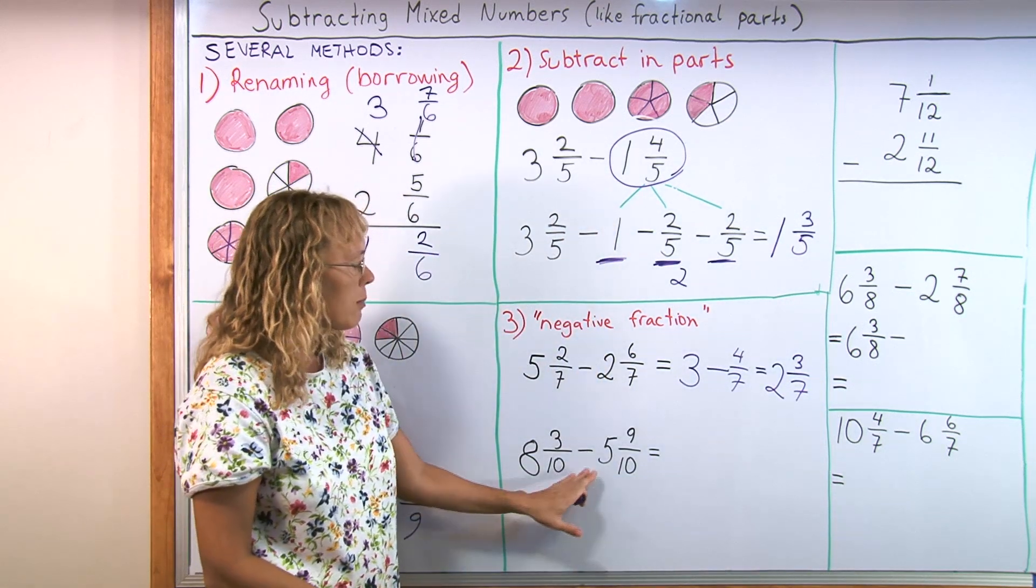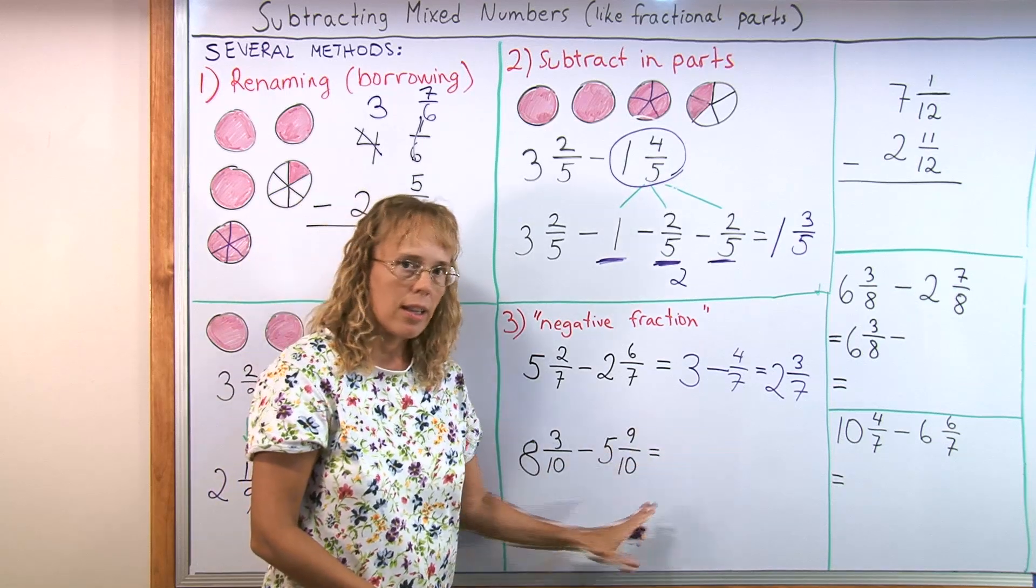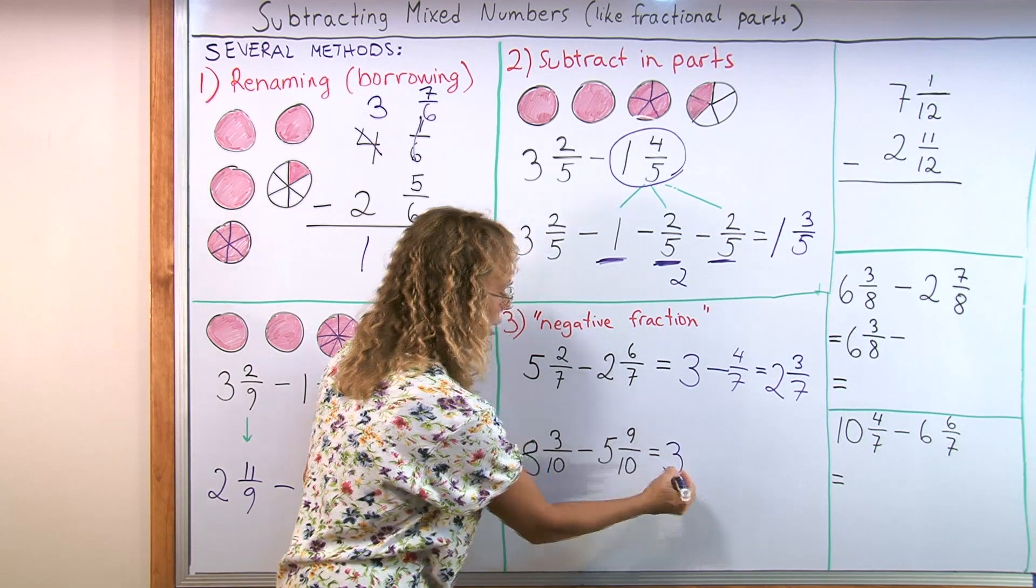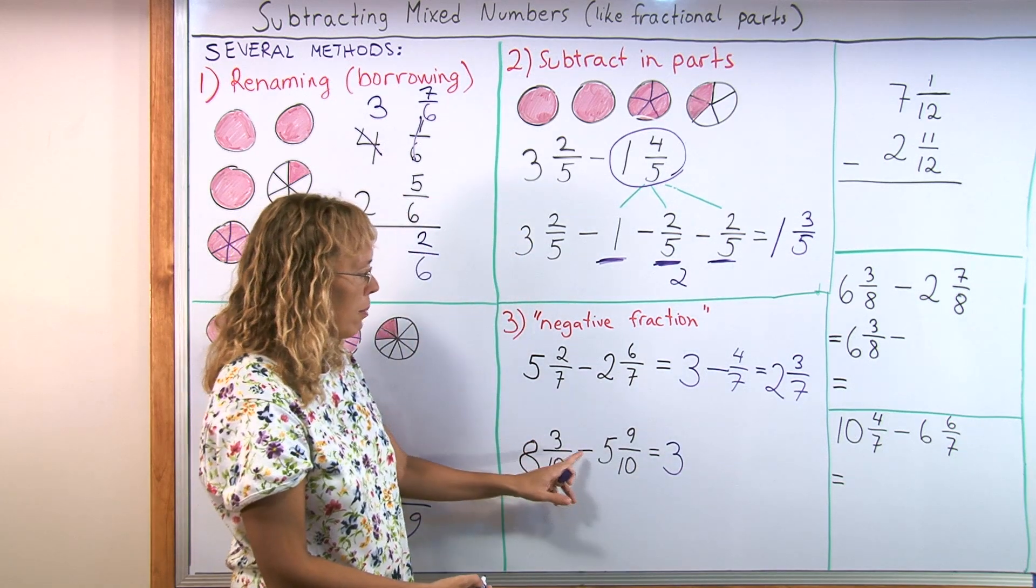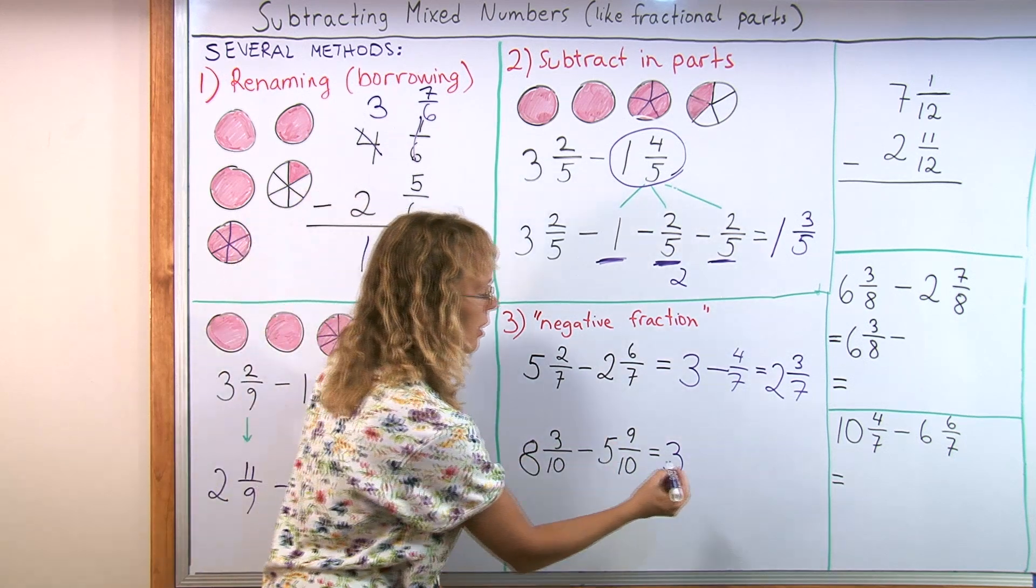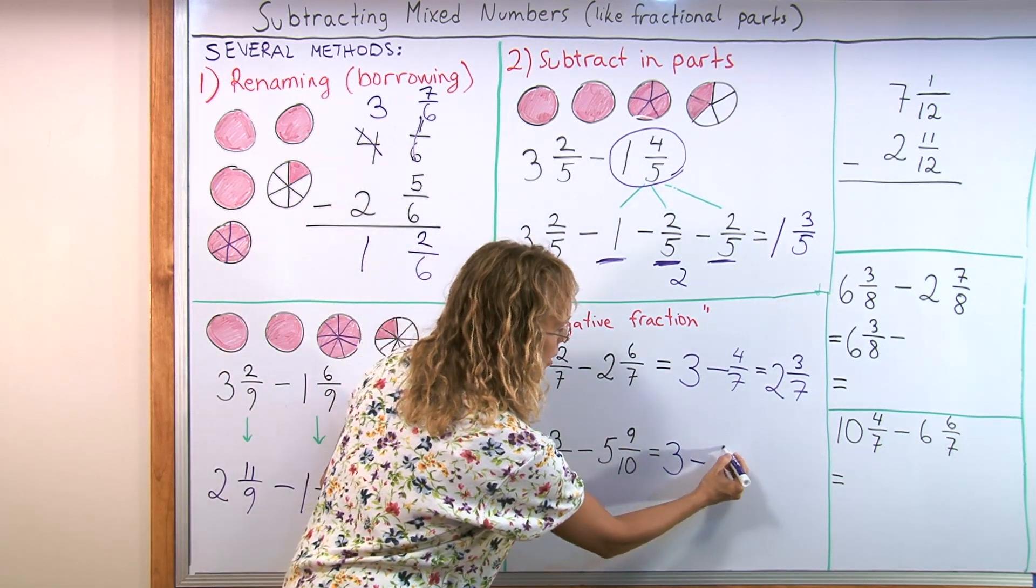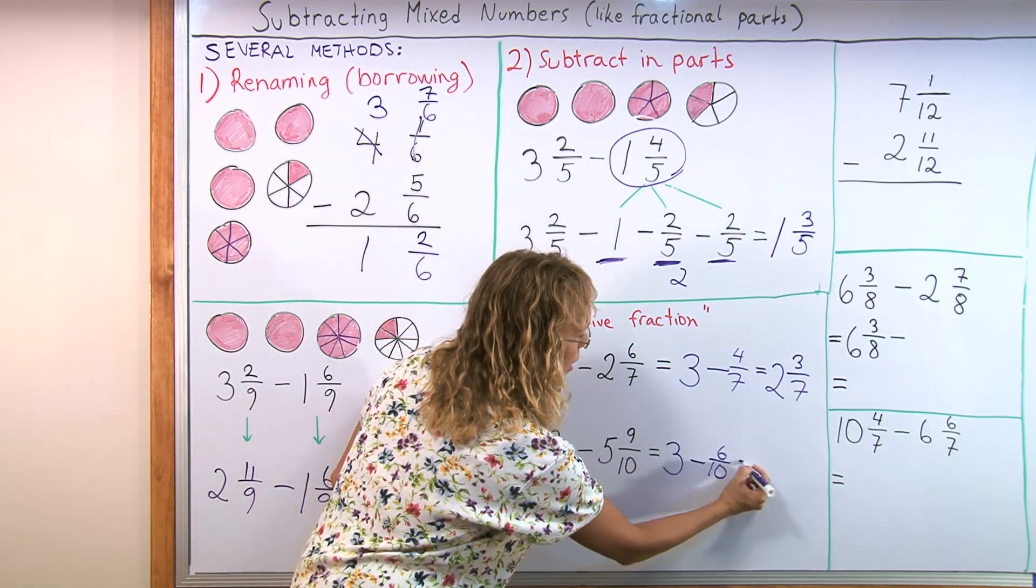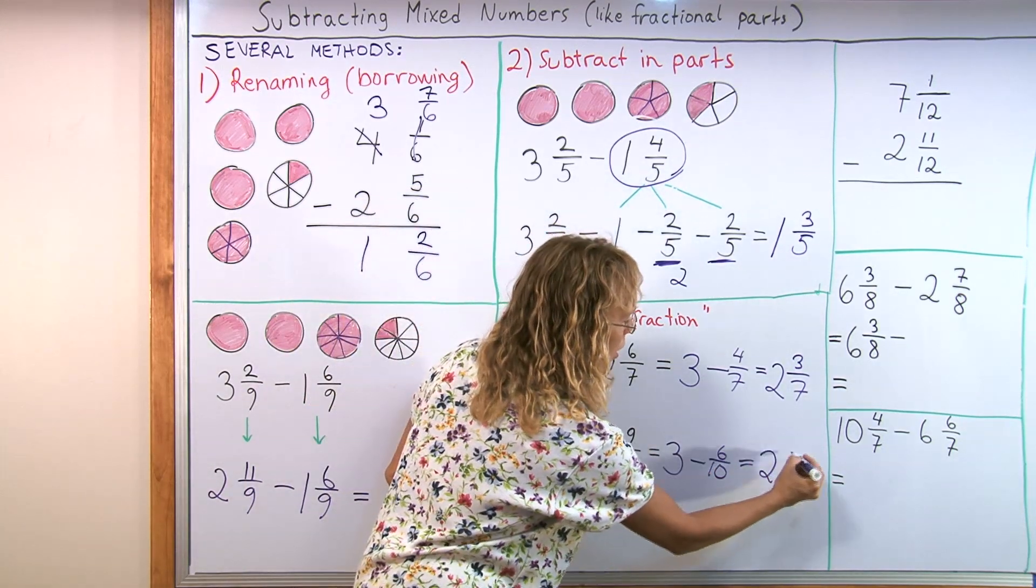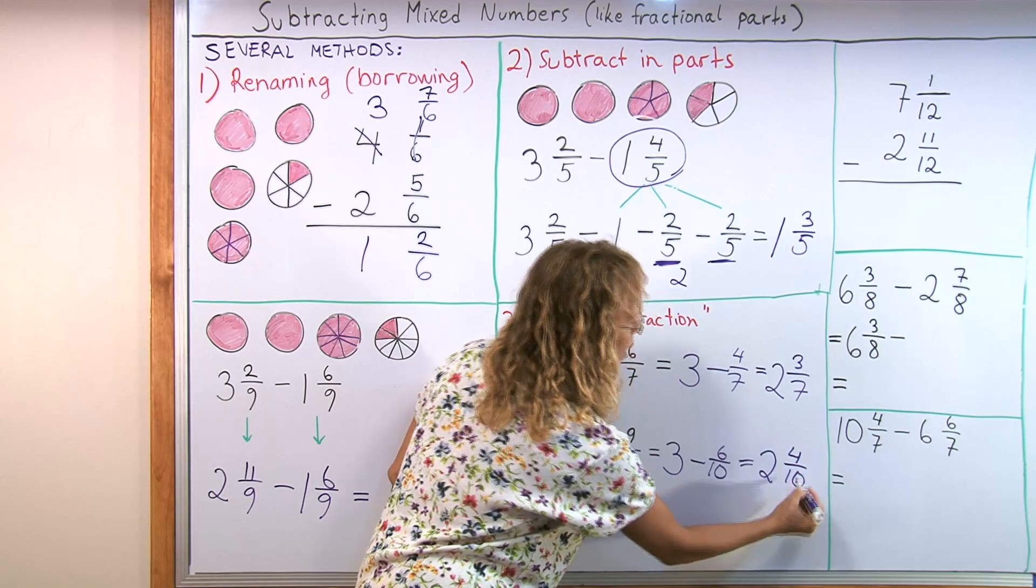Another example. 8 and 3/10 minus 5 and 9/10. First go 8 minus 5 equals 3. And then here, 3 minus 9 in the tenths. 3 take away 9 is negative 6, right? Negative 6/10. And now you do this subtraction. Which is then 2 and 4/10.